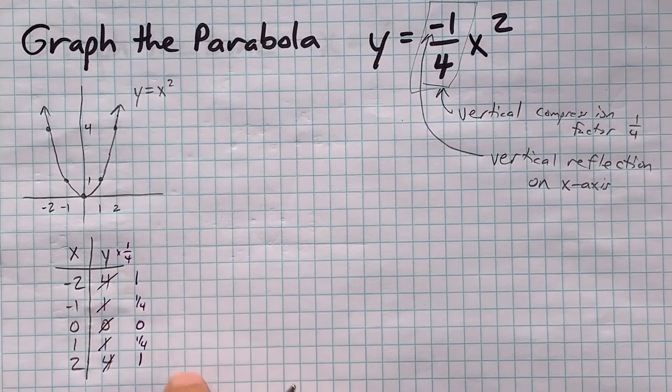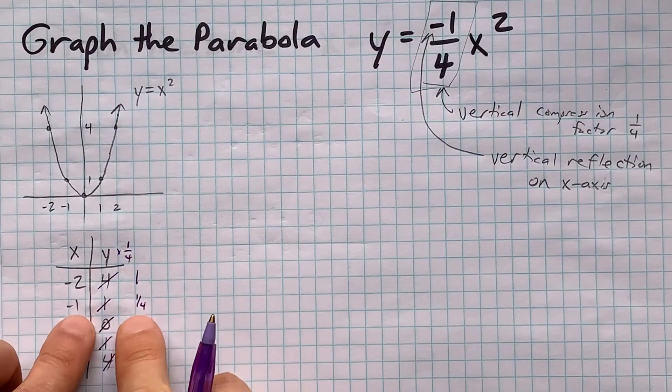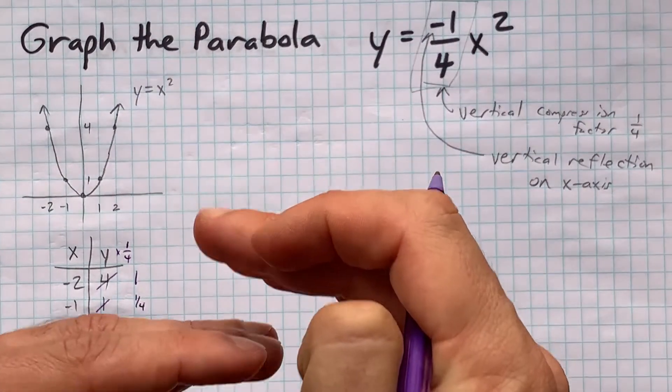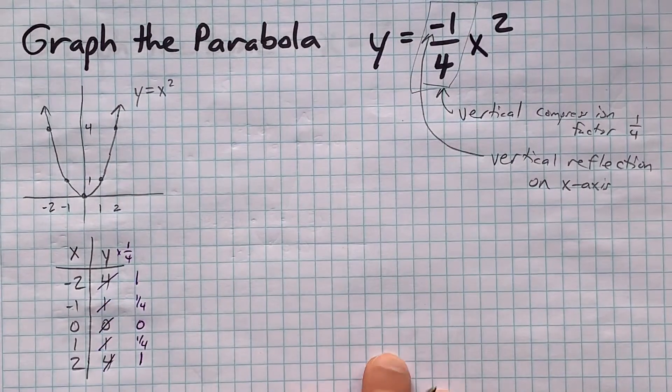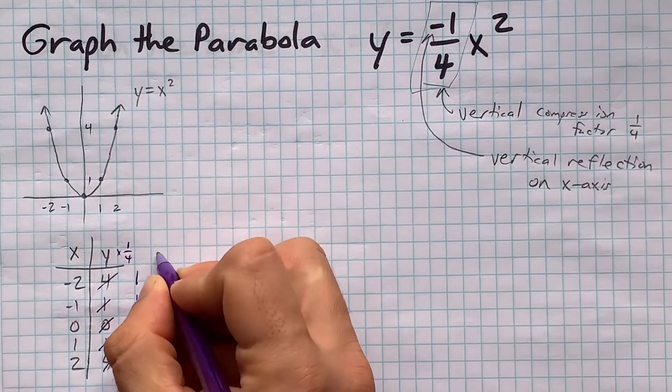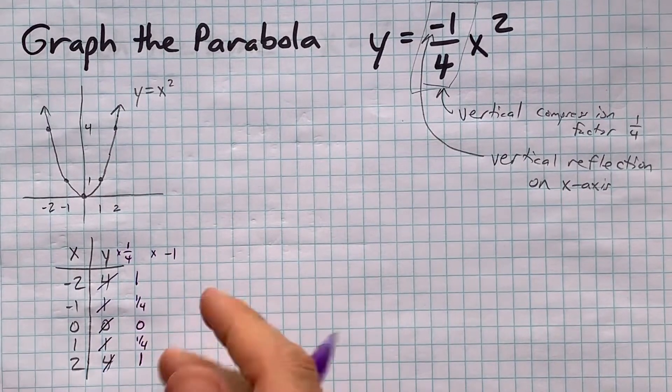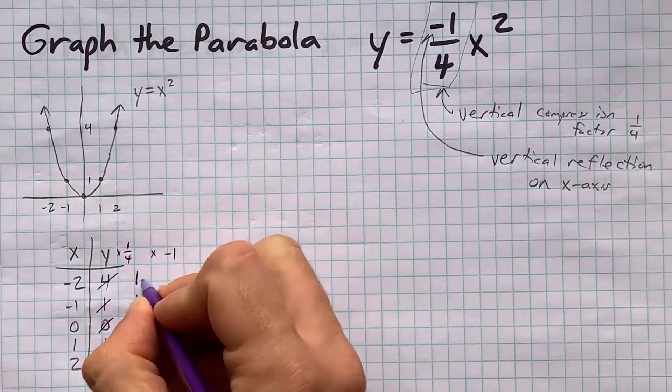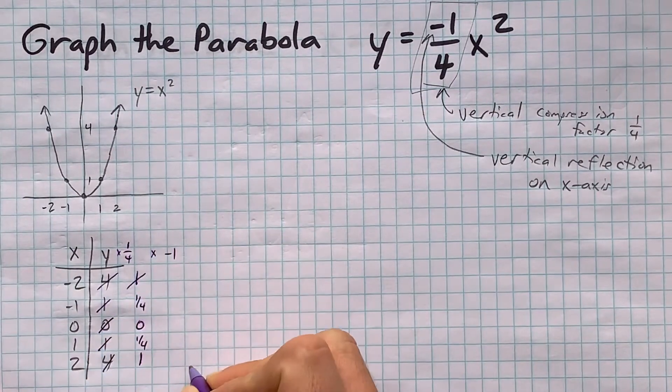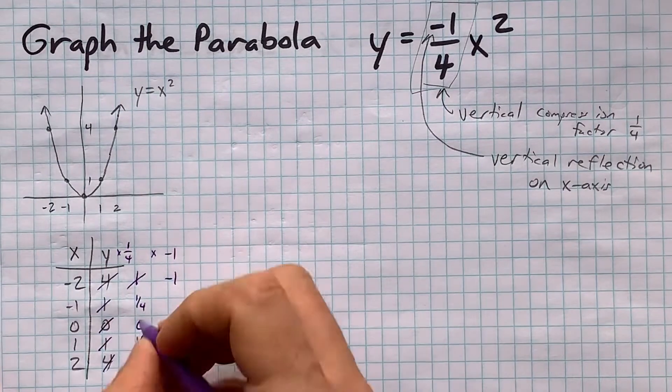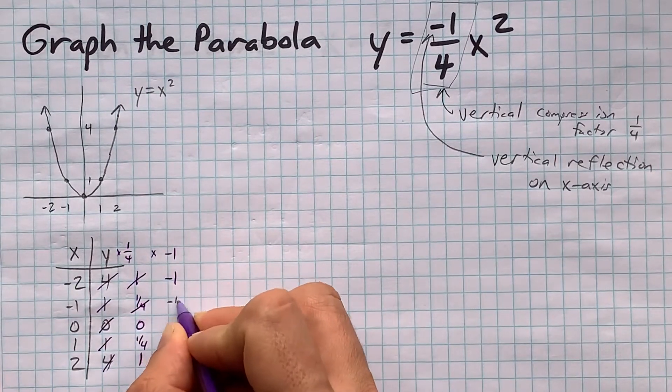So what we've done now is applied the vertical compression. We've smallerized all of the y's. The vertical reflection, on the other hand, is about multiplying all of those values by an extra negative 1. So what was at positive 1 on the y-axis is now negative 1. From a quarter to negative a quarter.